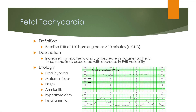Fetal tachycardia is defined as a baseline fetal heart rate of 160 beats per minute or greater for more than 10 minutes. It is described as an increase in sympathetic and decrease in parasympathetic tone, sometimes associated with a decrease in fetal heart rate variability. Etiology includes fetal hypoxia, maternal fever, drugs, amnionitis, hyperthyroidism, and fetal anemia.